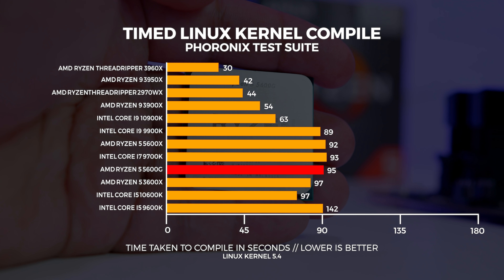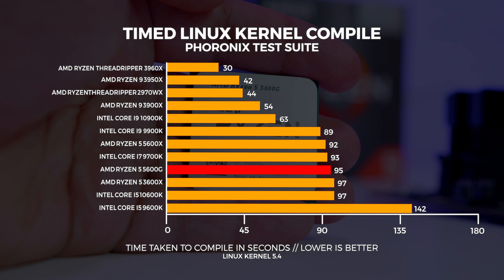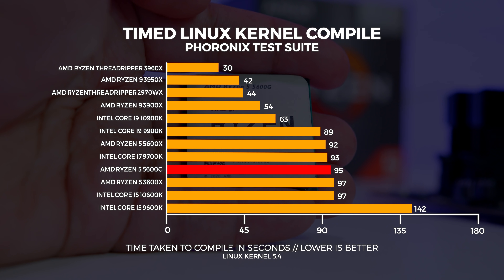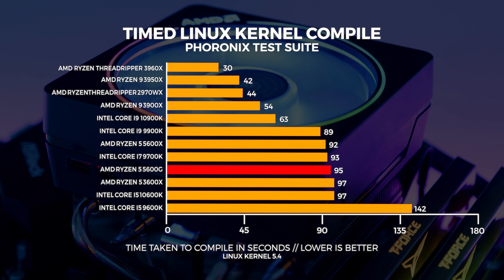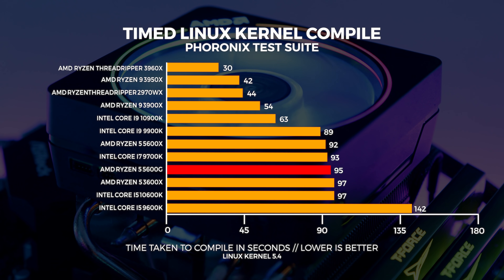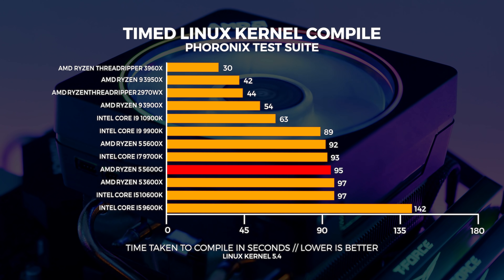How about a test that most people overlook — a timed Linux kernel compile test. This test is run with an older version of the kernel, as a majority of the CPUs already tested have been tested with that same kernel version, so it makes things a bit more fair and provides a nice comparison.